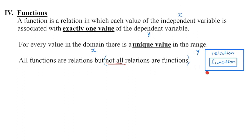Every function has some relationship between x and y, making it a relation. Not every relation is a function because in order to be a function, there is exactly one y value for a given x value. So for every domain value, there is a unique range value — one y only for that particular value of x.